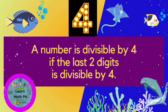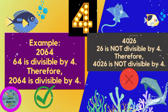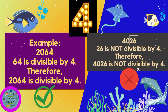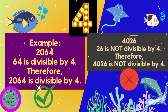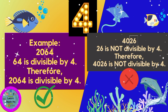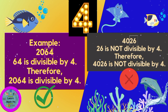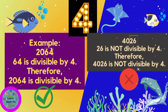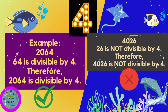A number is divisible by 4 if and only if the last 2 digits are divisible by 4. Kukunin natin yung last 2 digits. For example, the number 2064 — ang kukunin natin doon is yung 64. Is 64 divisible by 4? Yes. Therefore, 2064 is divisible by 4. Next example, 4026 — yung last 2 digits is 26. Is 26 divisible by 4? No. Therefore, 4026 is not divisible by 4. Kung hindi divisible by 4 yung last 2 digits, yung original number ay hindi rin divisible by 4, and vice versa.